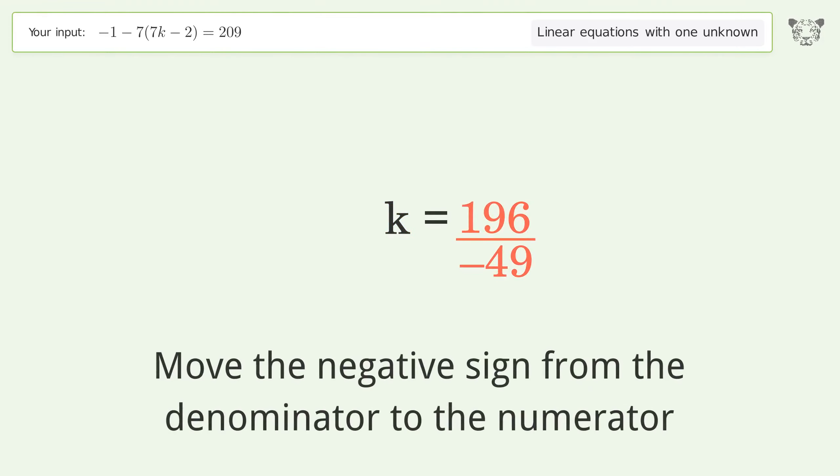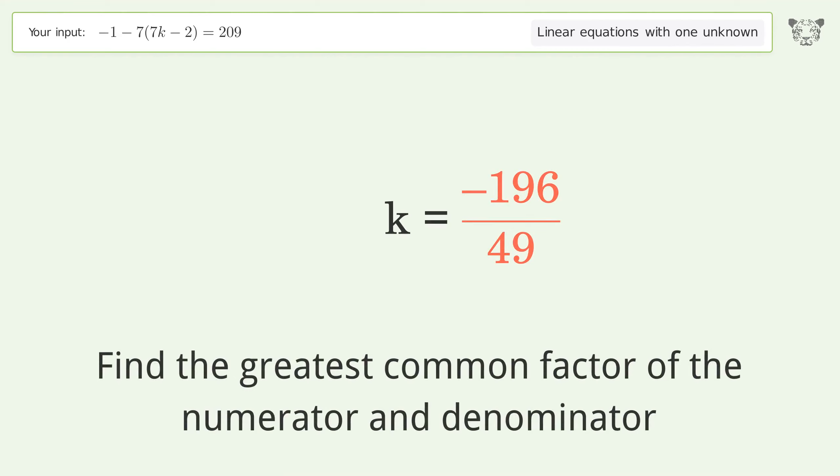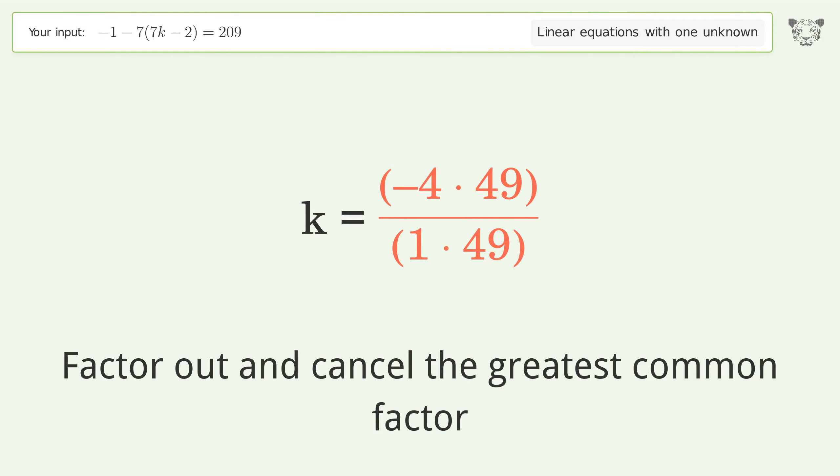Move the negative sign from the denominator to the numerator. Find the greatest common factor of the numerator and denominator. Factor out and cancel the greatest common factor.